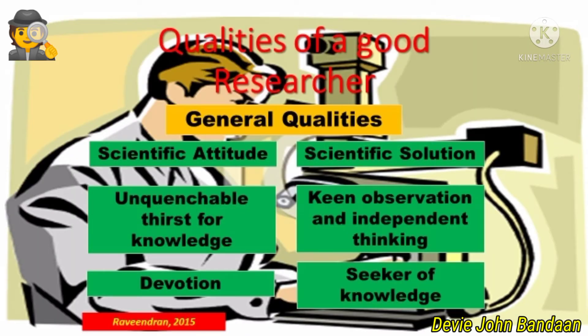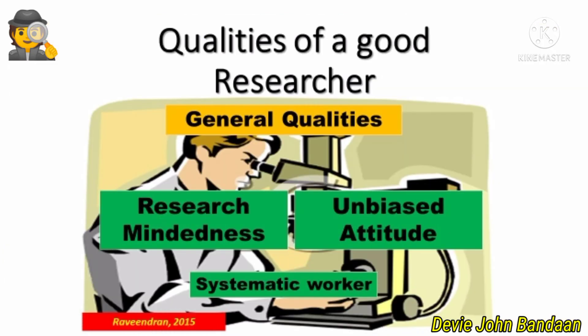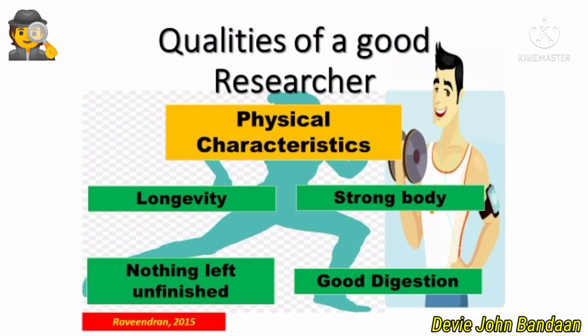What are the qualities of a good researcher? The general qualities include: scientific attitude, unquenchable thirst for knowledge, devotion, scientific solution, keen observation and independent thinking, and being a seeker of knowledge. The researcher should also have research-mindedness, an unbiased attitude, and be a systematic worker.